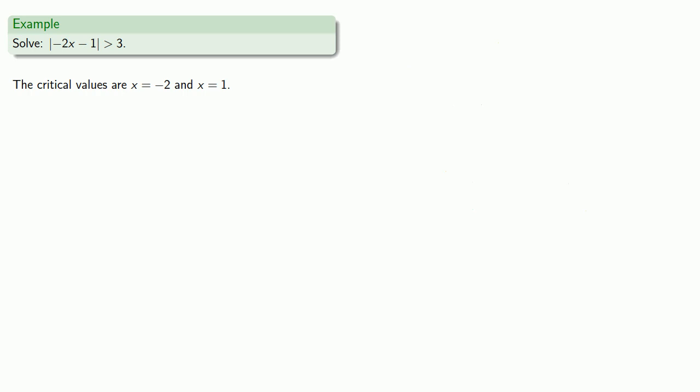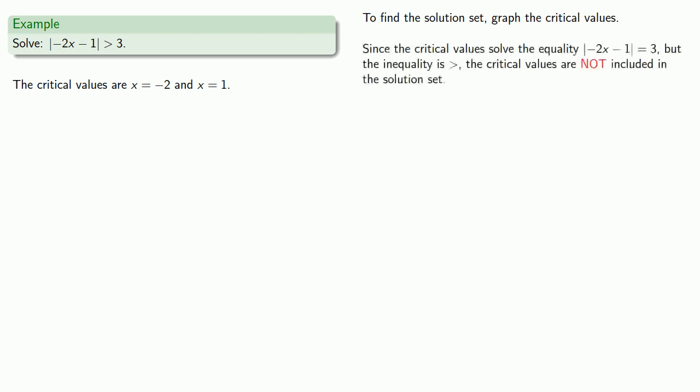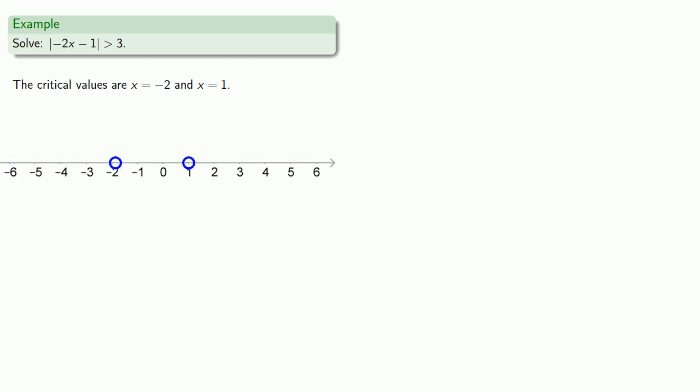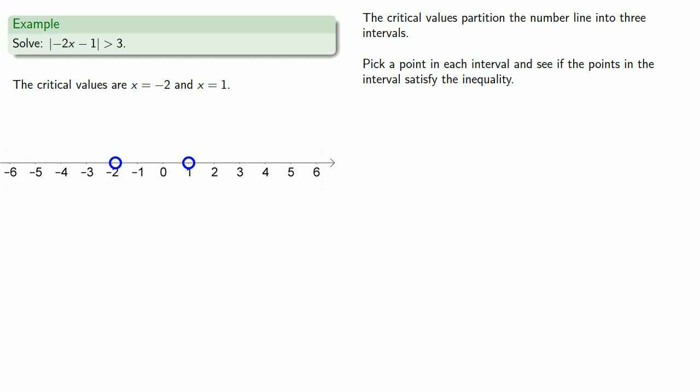Now if we want to find the solution set, we can begin by graphing the critical values. Since the critical values solve the equality minus 2x minus 1 equal to 3, but our inequality is strictly greater than, the critical values are not included in the solution set. So we'll use open circles for them. The critical values partition the number line into three intervals, and now we'll pick a point in each interval and see if the points satisfy the inequality.